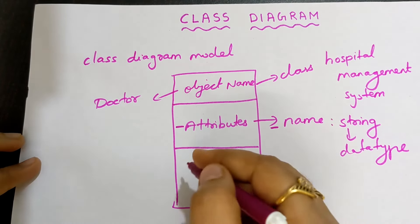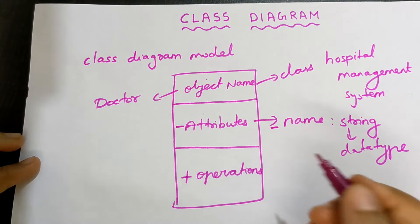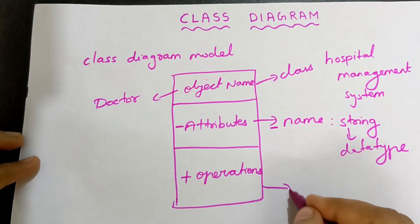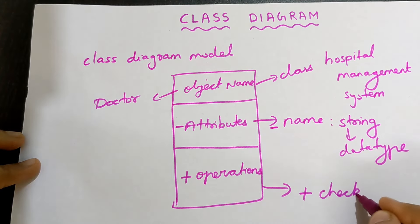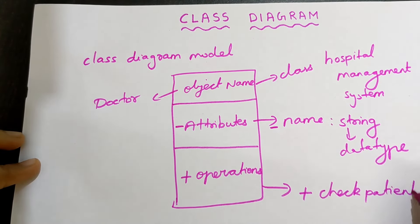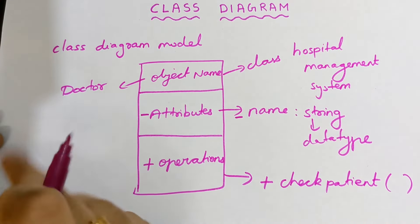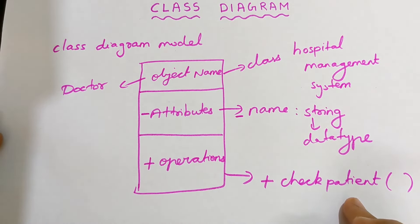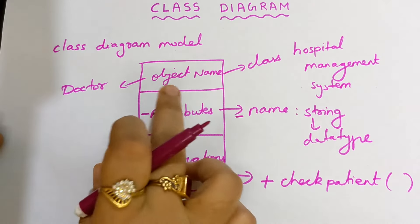Next, in the third box, I have to write its operations. I have to put a plus sign and write its operations. For example: check patient. This is one operation — checking the patient details. This is an operation the doctor can do in order to prescribe proper medicines. So in this way, you have to draw a class and divide it into three parts.